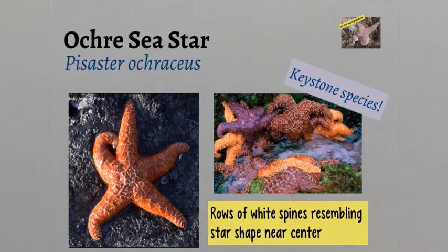Adult ochre sea stars have few predators, but may be eaten by sea otters and gulls. They are orange, brown, or purple in color, and have white spines that form a star shape in the center of the sea star.